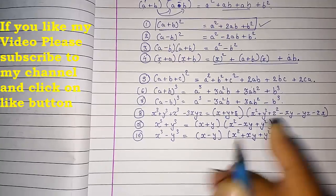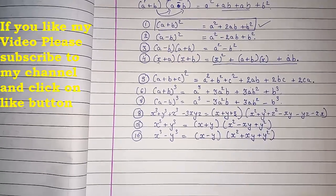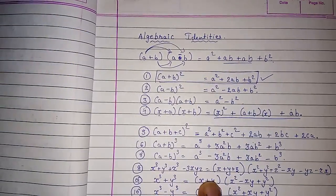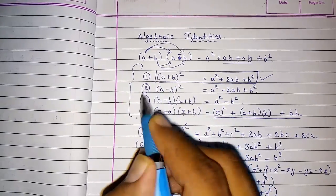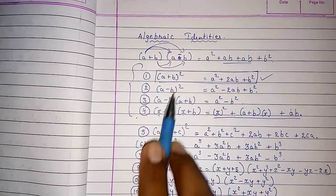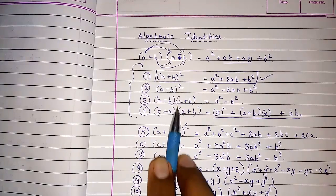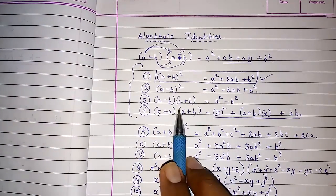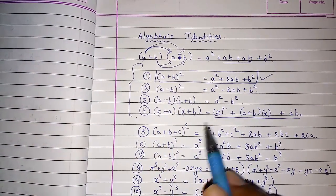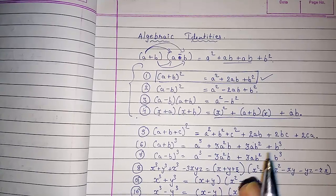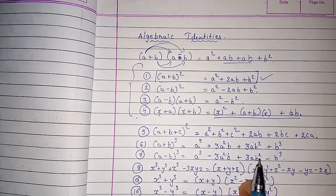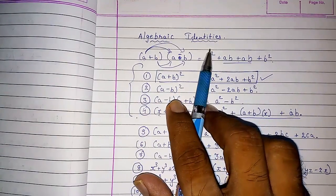So these are the basic algebraic identities, and these are coming in class 7th, 8th, and 9th, and these are very important. After this, all of these were found to make our calculation so simple and so short. Thank you so much for watching my video on Algebraic Identities.